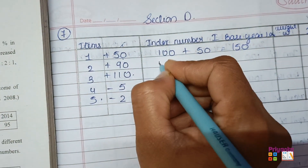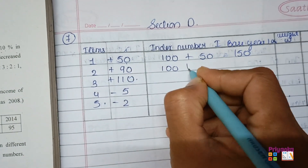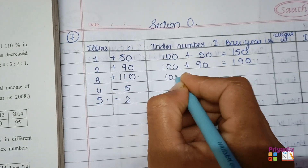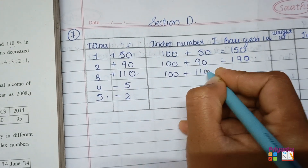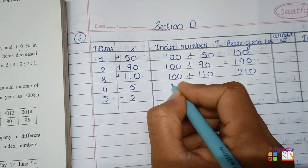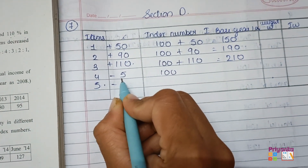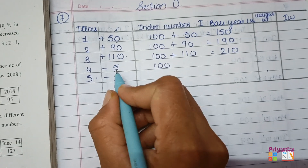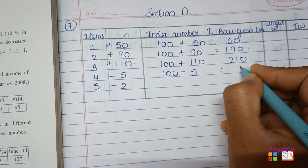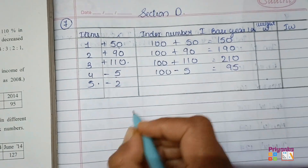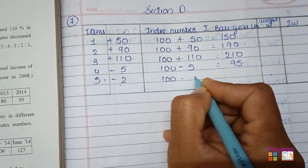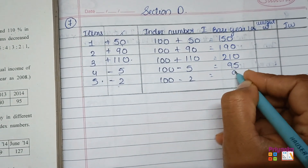So the index values are: 100 plus 50% increase gives I = 150. Next, 100 plus 90% increase gives 190. Then 100 plus 110 becomes 210. For the decrease, 100 minus 5% means 5 is subtracted, giving 95. And 100 minus 2 gives 98.